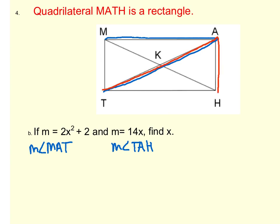What we know, because this is a rectangle, is that the angles M, A, H, and T have to be 90 degree angles. So what we're going to do is add these two measures together and set them equal to 90. So 2x squared plus 2 plus 14x has to equal 90.